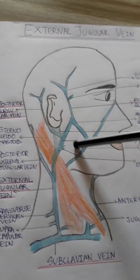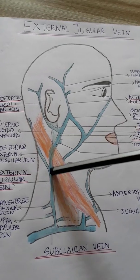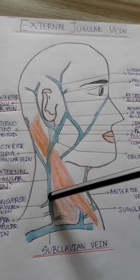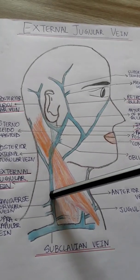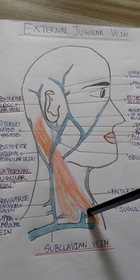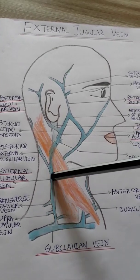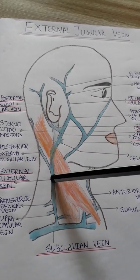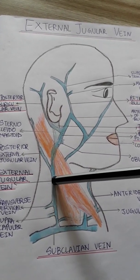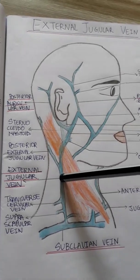The external jugular vein runs vertically downwards and backwards under cover of the platysma, which is the muscle of the neck. It then pierces the deep cervical fascia in the anterior inferior angle of the posterior triangle.